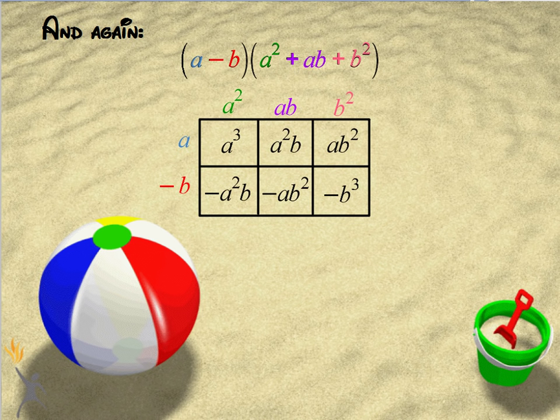So when I set this up and multiply them together, again, I get a couple sets of matching terms. Terms that are going to cancel. I have a squared b, and I'm subtracting an a squared b, so they'll cancel. And again, with a b squared and negative a b squared, they're going to cancel.